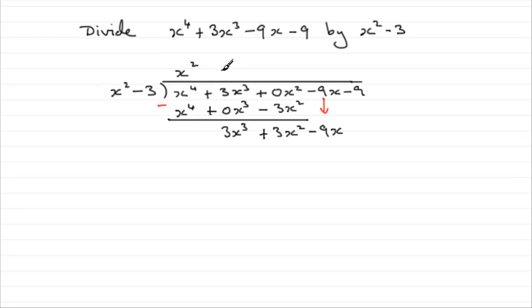And we start all over again. What do I need to multiply the x squared with in order to get 3x cubed? And that's got to be plus 3x. So, stick that up there. And then, plus 3x now times all of x squared minus 3.